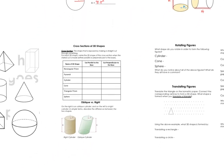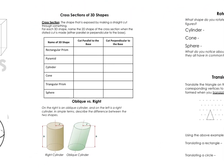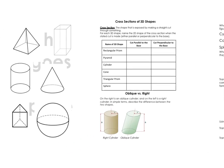Now we're going to look at some other properties of three-dimensional shapes. The first thing is cross-sections. A cross-section is the shape that is exposed by making a straight cut through something. We're going to look at two types of cross-sections: cuts that are parallel to the base, and cuts that are perpendicular to the base.